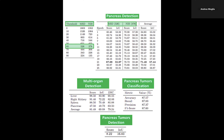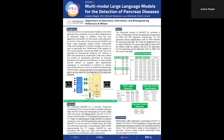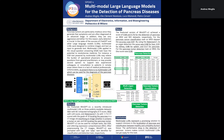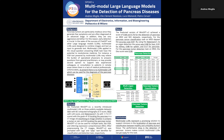For pancreas tumor detection on the MSD dataset, the score was 0.08. In conclusion, multimodal LLMs represent a promising solution to support clinicians in the localization of the pancreas and classification between healthy and unhealthy tissue in case of tumors. However, the poor performance in the detection of pancreas tumors indicates that current multimodal LLMs are not yet ready for this task.